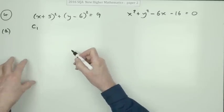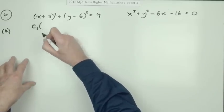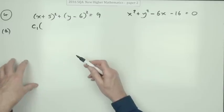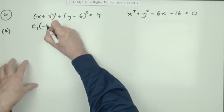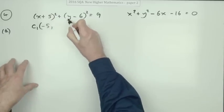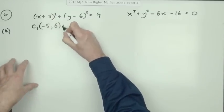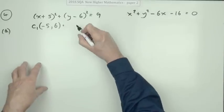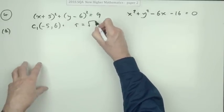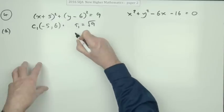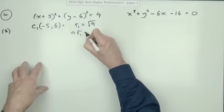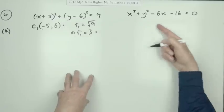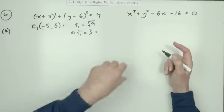Using C1 to stand for the center of the first circle: it's simply what's being subtracted — x minus what, so that's negative five; y minus what, so that's six. That's one mark. Then the equation says equals r squared, and since that equals nine, r1 must be the square root of nine, which is three. There's another mark.